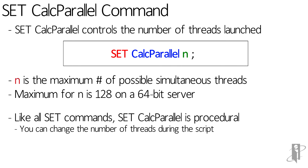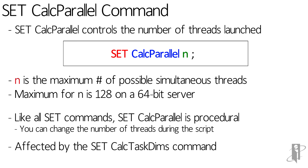The setCalcTaskDims setting will affect how many threads can actually be launched, because CalcTaskDims defines how many sparse dimensions at the end are used to launch simultaneous tasks. So if you have a sparse dimension at the end that only has three members and your CalcTaskDims is set to one, the most threads it can possibly launch is three, because it's going to launch each member of that dimension onto its own thread.